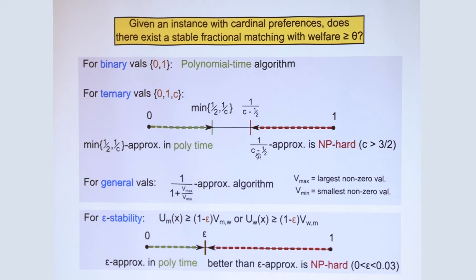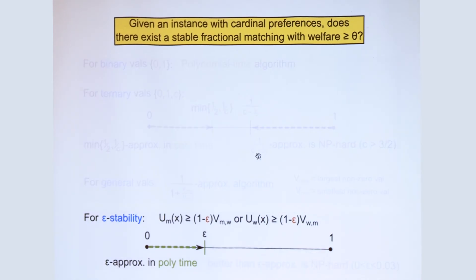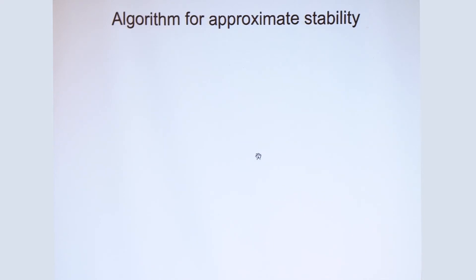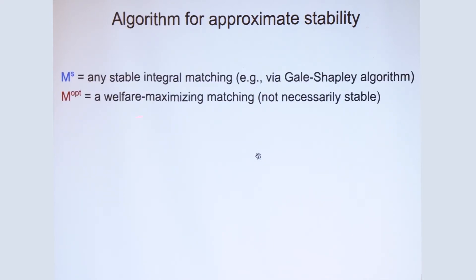So the next algorithm I want to talk about concerns epsilon-stable matchings. So here, just as before, we are going to, again, compute the optimal matching. And in addition, we are also going to compute a stable integral matching, say using the deferred acceptance algorithm of Gale-Shapley. And the algorithm is just one line. Just output this convex combination of the stable matching and the optimal matching.